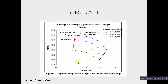This is a surge cycle. A typical compressor surge line is shown on a performance map. On the x-axis we have flow, and compression ratio pd over ps along the y-axis. We see that the compressor flow starts reducing, and then reaches the surge limit line where the flow becomes negative and then recovers. This cycle is called a surge cycle.